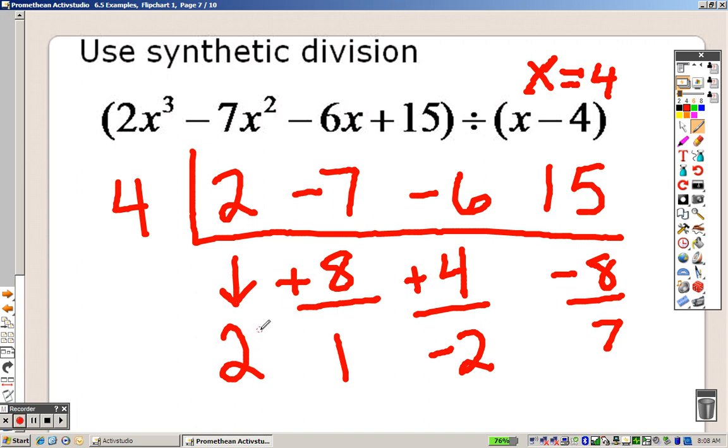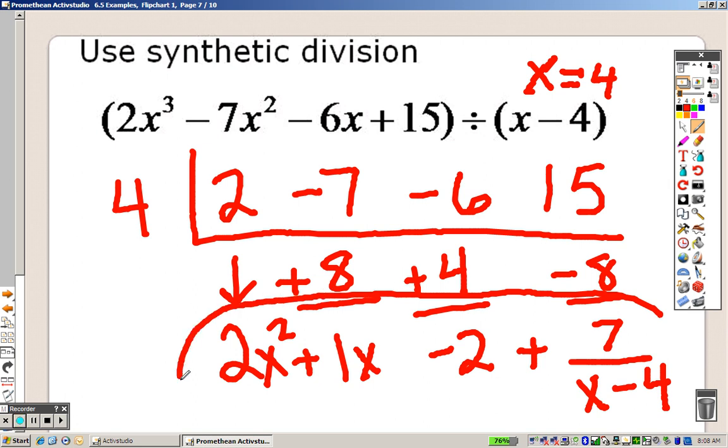So remember, it's one step lower. That's 2x's cubed, so this is 2x squared plus 1x minus 2 plus, since this is your remainder of 7, it's 7 over x minus 4. And right there on the bottom, that is your answer.